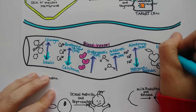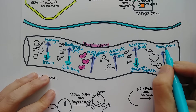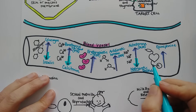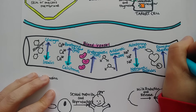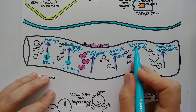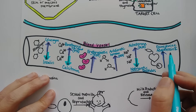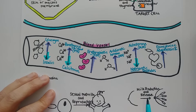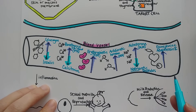Epinephrine, or adrenaline, directly makes blood vessels constrict and blood pressure go up. Similarly, angiotensin II raises blood pressure directly by constricting blood vessels, and it also stimulates more release of aldosterone and more release of anti-diuretic hormone — making it a very potent raiser of blood pressure. Natriuretic peptides decrease blood pressure as well.